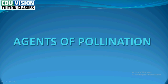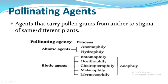What are agents? Agents means which carry something. So what happens here? Agents will carry pollen grains for pollination. And where do pollen grains transfer from? From anther to stigma of the flower. So pollinating agents play a very important role in pollination. Agents carry pollen grains from anther to stigma of the same or different plants.